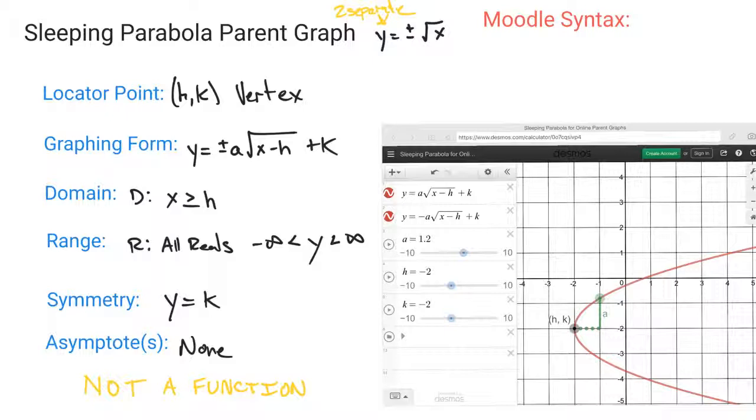Now for Moodle, to make things more simple, we do use the plus and minus. So the notation or the syntax you're going to use for that is plus minus a, the square root symbol. Now you need the parentheses around x minus h again, because you need to put all that stuff underneath the square root, and then you finish with the plus k. Again, we try to keep this as simple as possible. The only thing that needs the parentheses is the x minus h, because that is all underneath this square root operation.